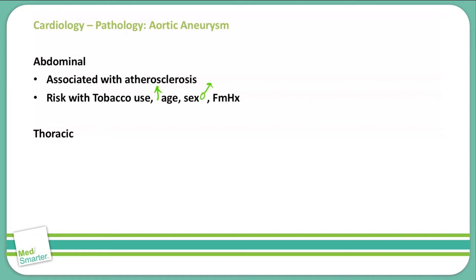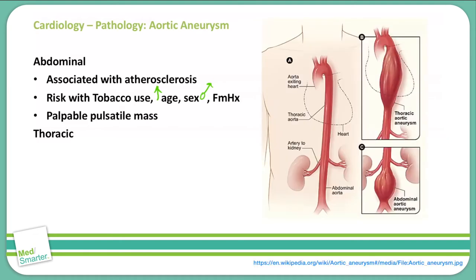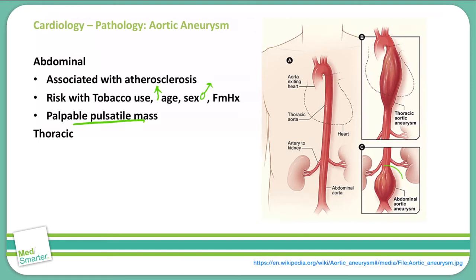The diagnostic sequela associated with abdominal aortic aneurysms are palpable pulsatile masses located within the abdominal cavity. As you can see in this picture, the abdominal aortic aneurysm typically is going to be infrarenal — so beyond the renal arteries in the abdomen — and it will be a palpable mass within the abdomen that pulses with each heartbeat.